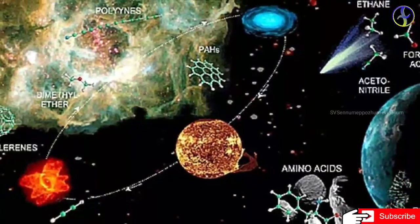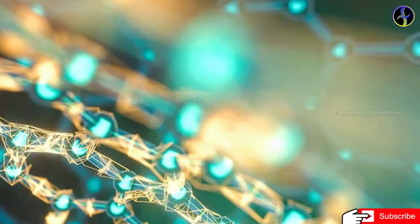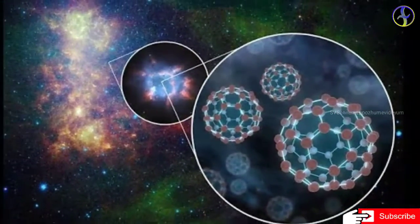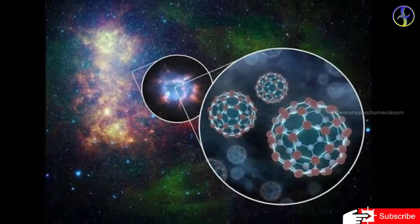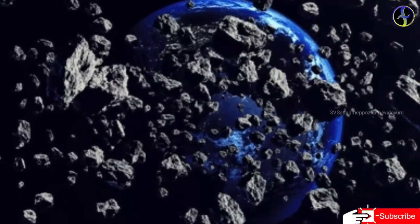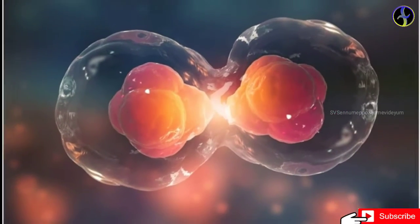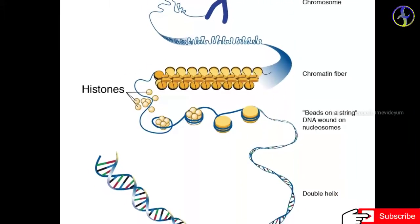The fifth is called pseudo-panspermia. Pseudo-panspermia is about complex organic molecules being created in space. Rather than complete organisms, the building blocks of life like amino acids and uracil could have arrived from space.